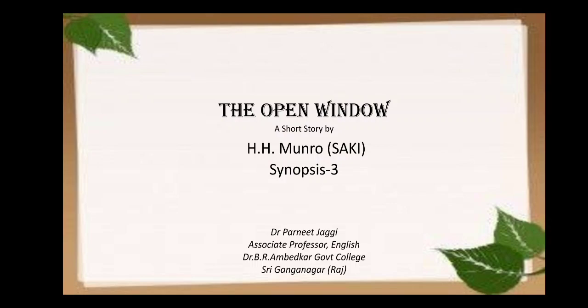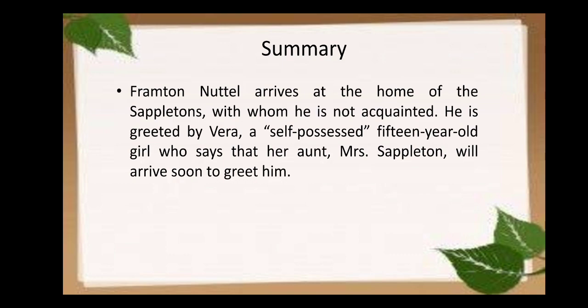Hi, I'm Parni Jaggi. Welcome students to this third lecture on the short story 'The Open Window' by H.H. Monroe, also known as Saki. 'The Open Window' is a 1914 short story about a man named Frampton Nuttall who is frightened by the fanciful story of a young girl called Vera. We also discussed the characters, among whom Frampton Nuttall is the main character or protagonist.